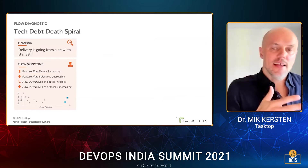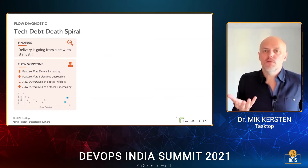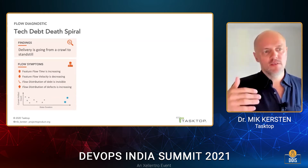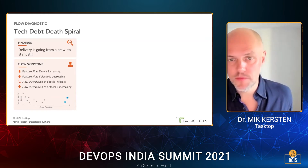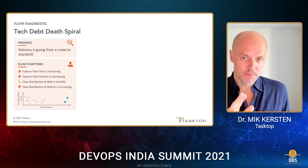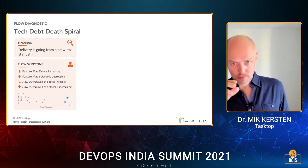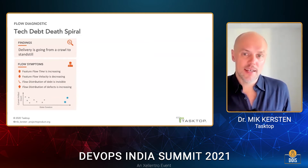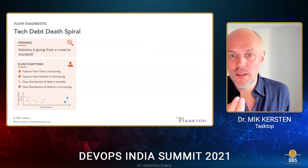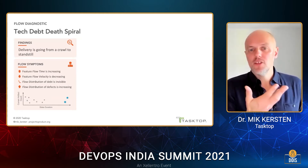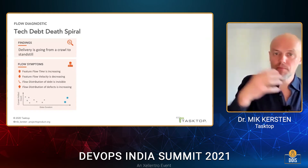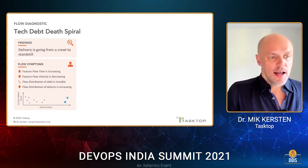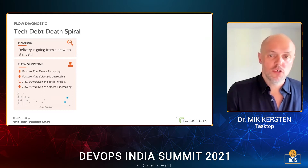This is what we call the tech debt death spiral diagnostic — when we're seeing work go from basically a crawl to a standstill. Feature flow time is increasing, feature flow velocity is decreasing. One thing I didn't mention: the flow distribution of technical debt was invisible, and this was one of the key problems. They had features, defects, and risks — but work was not made visible for tech debt. If tech debt is not visible, either you're managing tech debt or it's managing you. Clearly it was managing them, because all of this tech debt was in core backend services and not being addressed in any meaningful way. We also see the flow distribution of defects increasing.